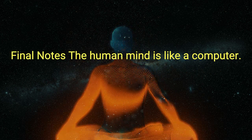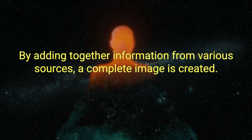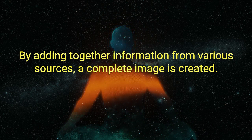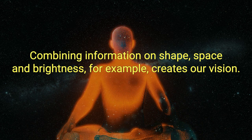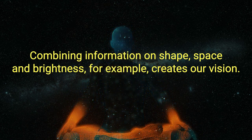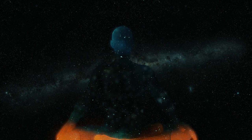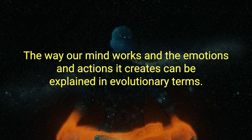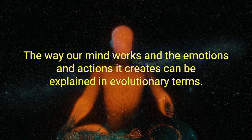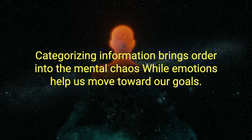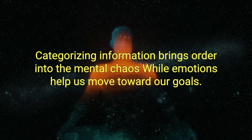Final notes. The human mind is like a computer. By adding together information from various sources, a complete image is created. Combining information on shape, space, and brightness, for example, creates our vision. By quickly categorizing objects around us, we can infer information about them. The way our mind works, and the emotions and actions it creates, can be explained in evolutionary terms. Categorizing information brings order into the mental chaos, while emotions help us move toward our goals.